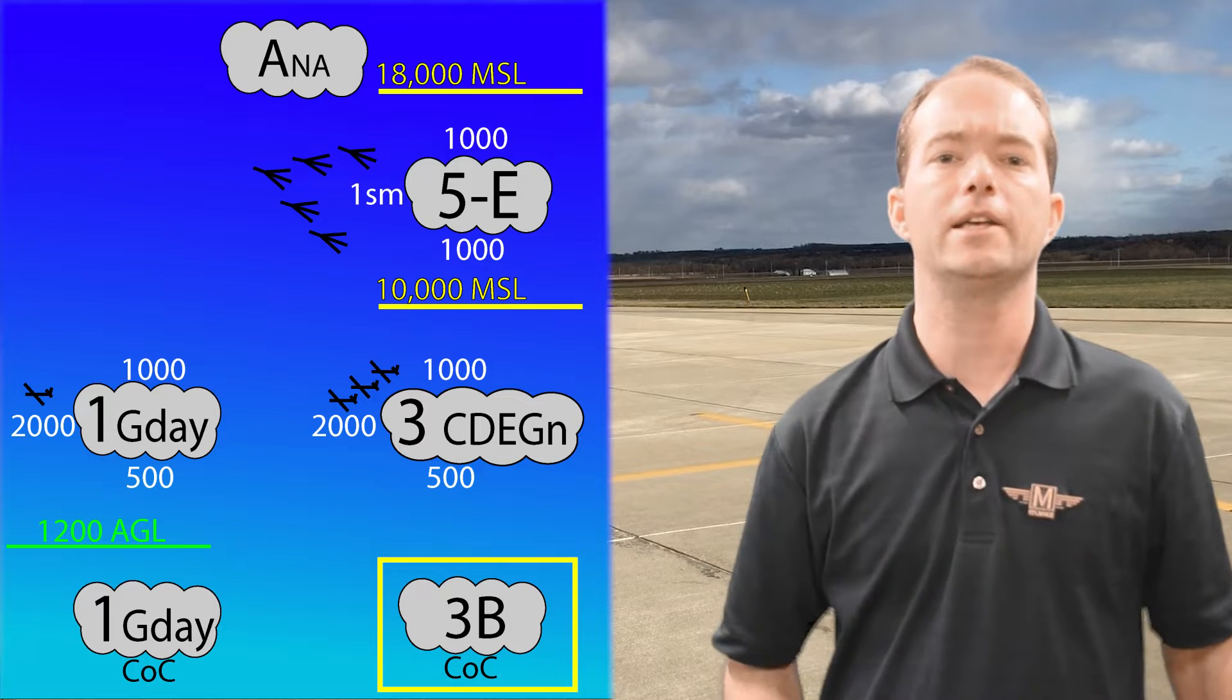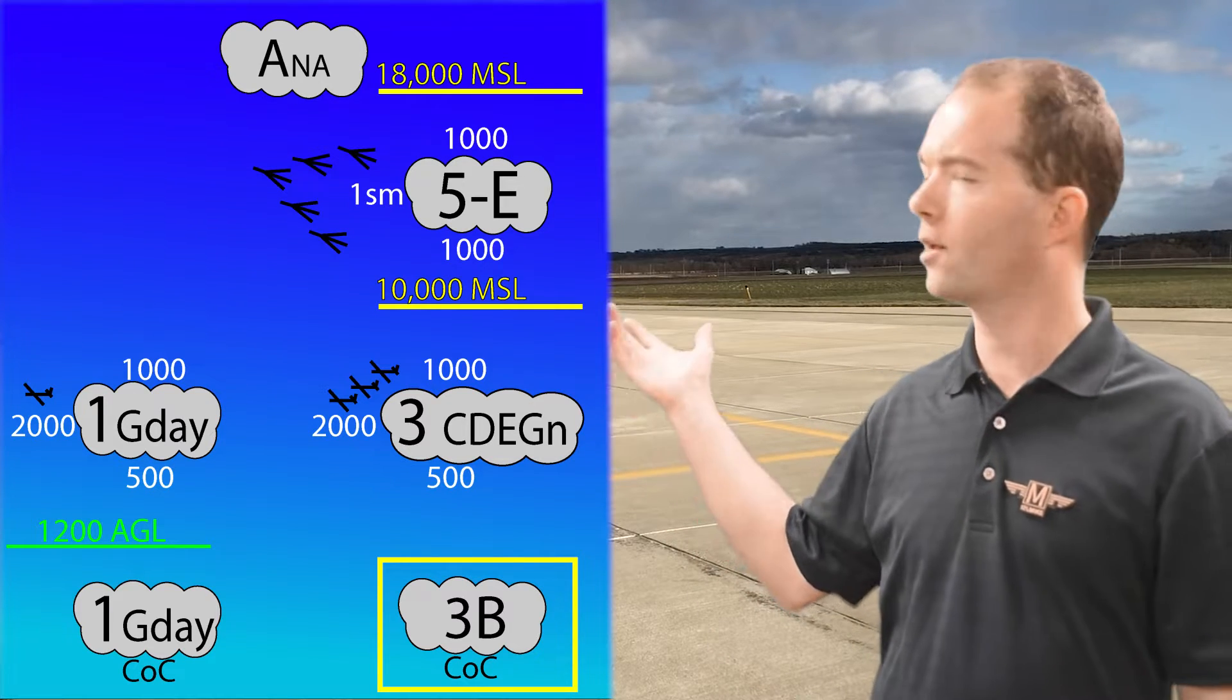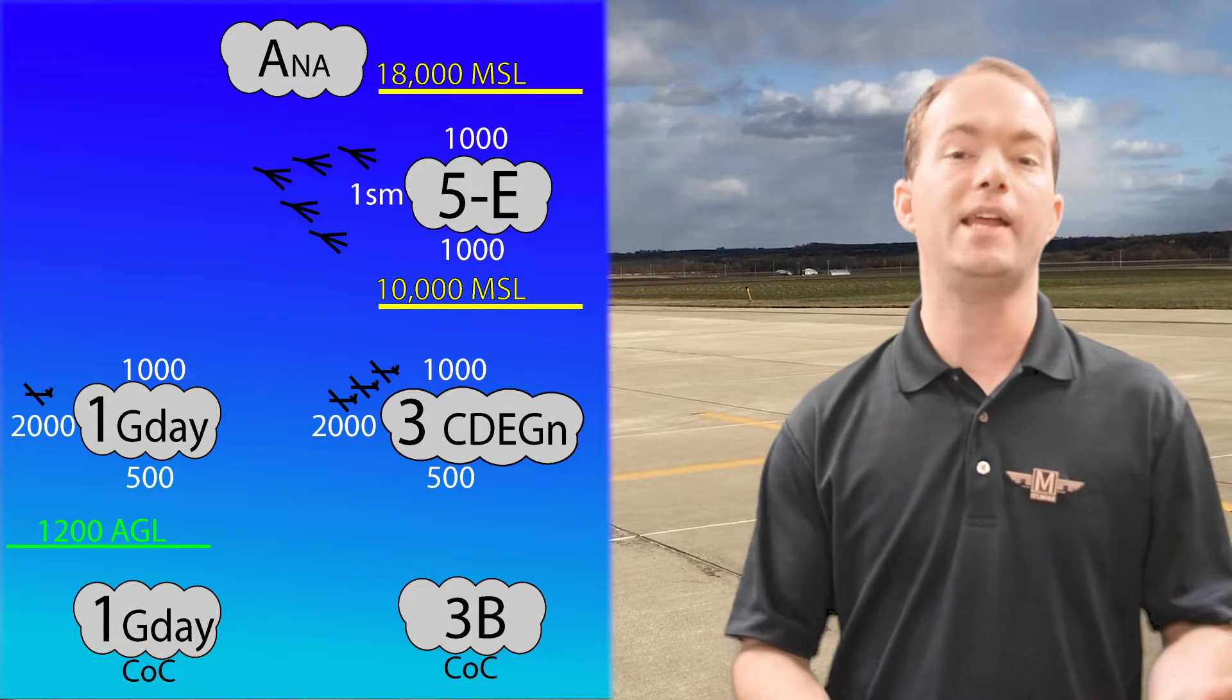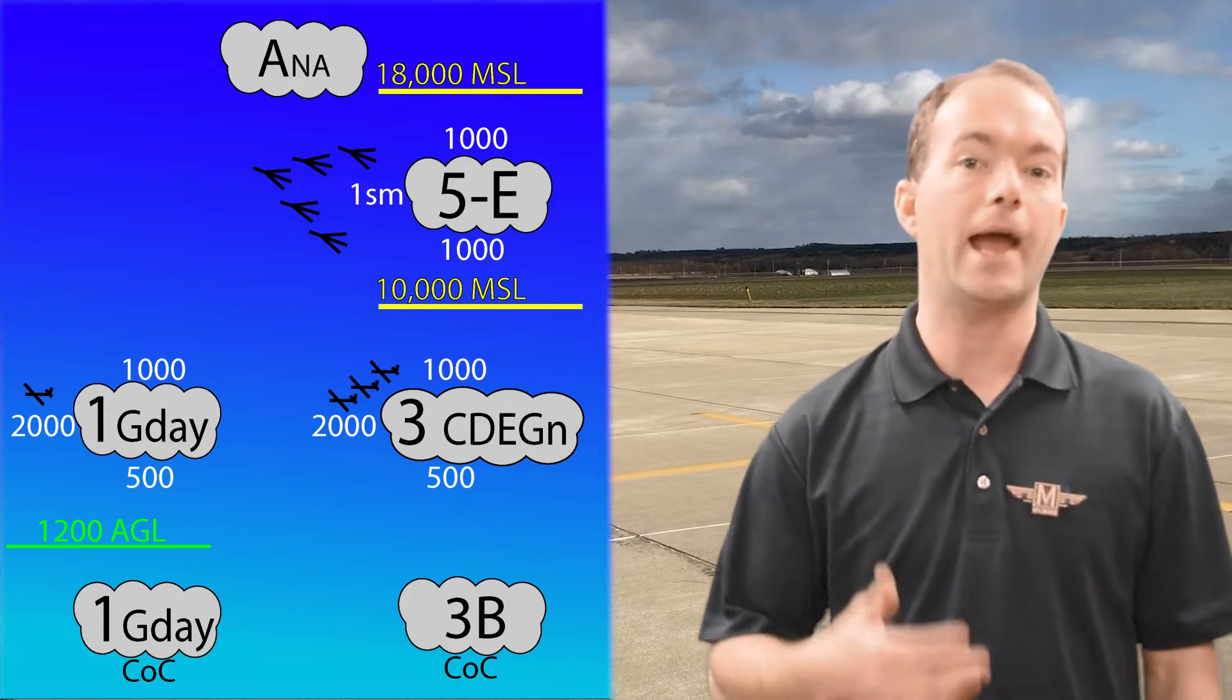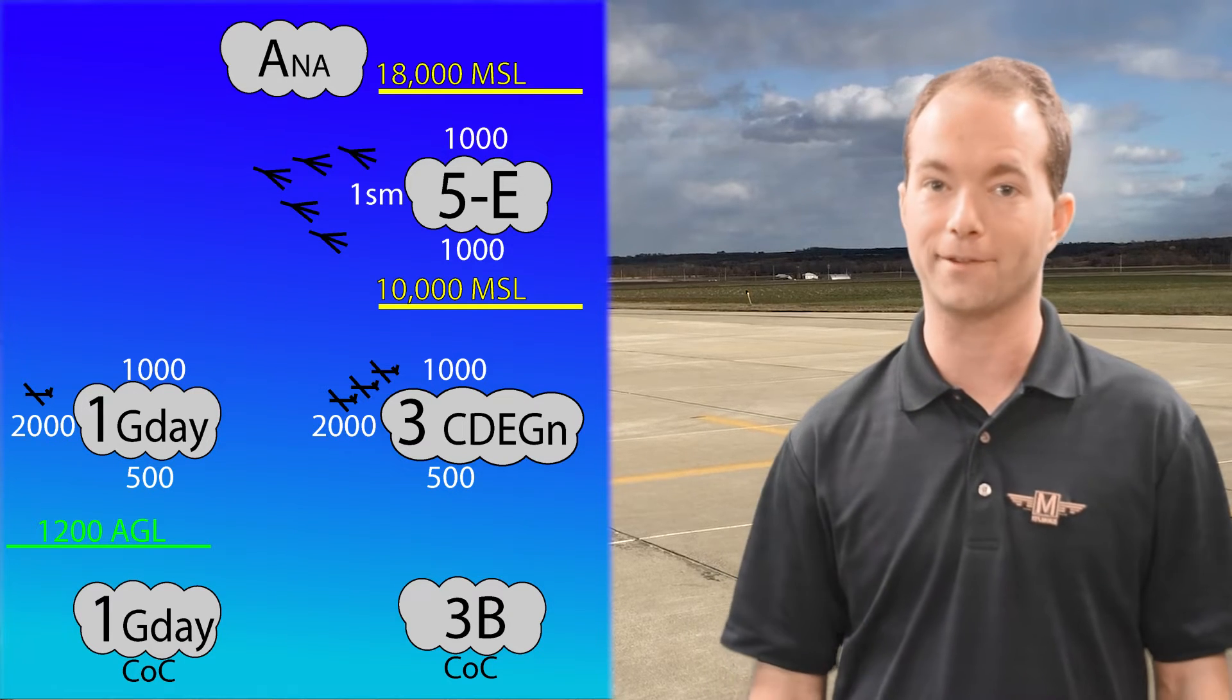The weird one in here is class B. It needs 3 miles visibility, but you just have to remain clear of clouds. There's no clearance requirement for the clouds. You need ATC clearance to get in and clearance from the clouds. Clearance from ATC and clouds in class B airspace.